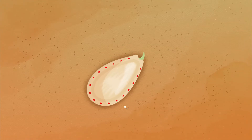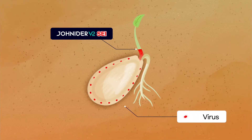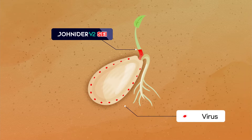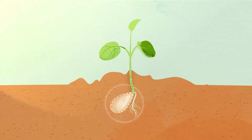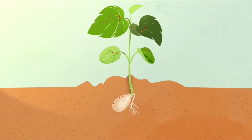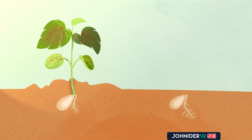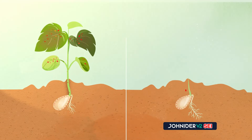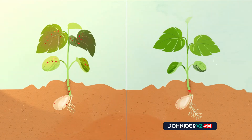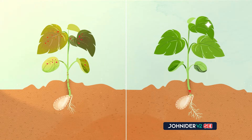Joneter V2 SEI is a product that inhibits the activity of seed-borne virus infected in the seeds of Cucurbitaceae. In general, when seeds are infected with viruses, viruses spread to the seedlings. But with Joneter V2 SEI, when the seed germinates, it is not infected with the virus — Joneter V2 SEI works to produce normal seedlings.